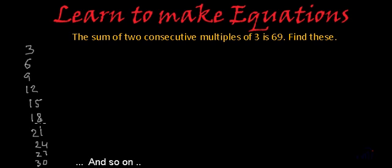So this is the table of 3 and what are two consecutive numbers? Two consecutive numbers are the numbers next to each other. These are two consecutive numbers. Similarly, these two are also two consecutive numbers.